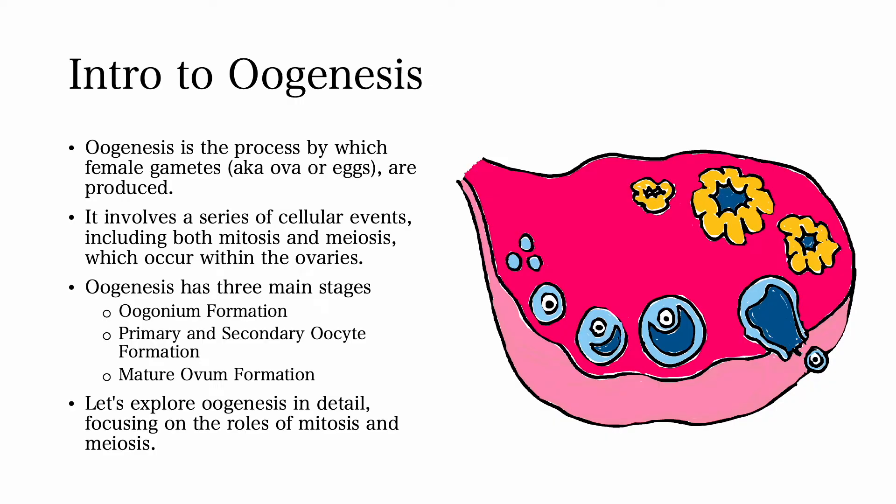Oogenesis is the process by which female gametes, also known as ova, are produced. It involves a series of cellular events including both mitosis and meiosis, which occurs within the ovaries. We will discuss oogonium formation, primary and secondary oocyte formation, and mature ova formation.